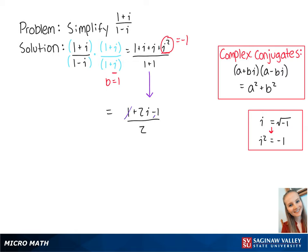The 1's cancel out, leaving us with 2i over 2, which is equal to i. This is the final answer.